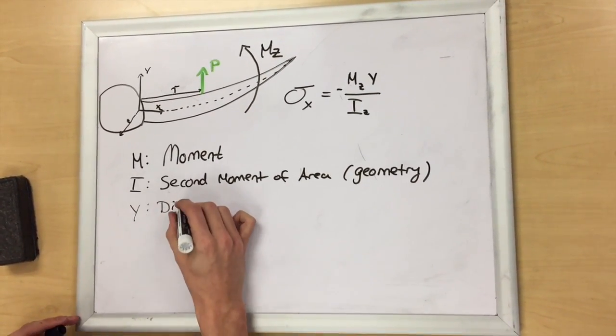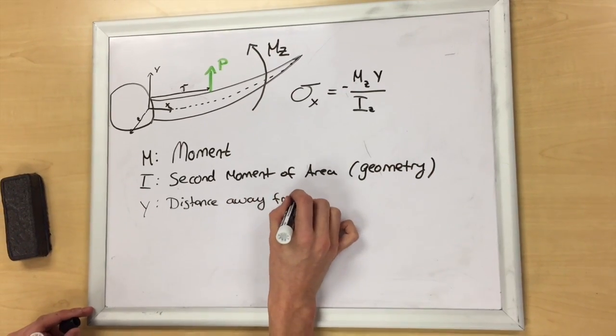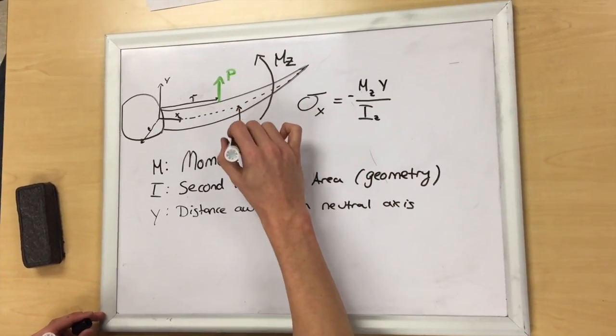Y is a distance away from the neutral axis. The neutral axis is where the stress is equal to zero, and it is shown here as a dashed line.